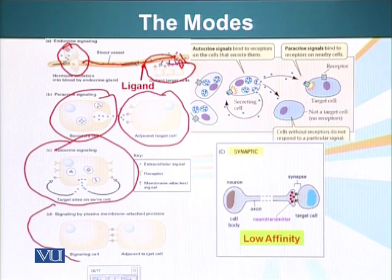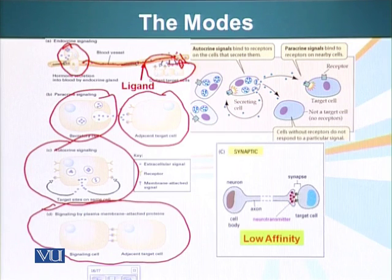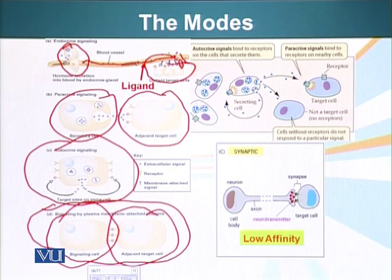Signaling by plasma membrane-attached proteins: signaling molecules don't have to be mobile all the time. They can also be attached or embedded in the plasma membrane of a cell. So when two cells interact, one has a ligand or signaling molecule present on its plasma membrane and the other has a receptor on its cell surface. When this interaction takes place, the signaling information is transmitted to the adjacent or target cell.